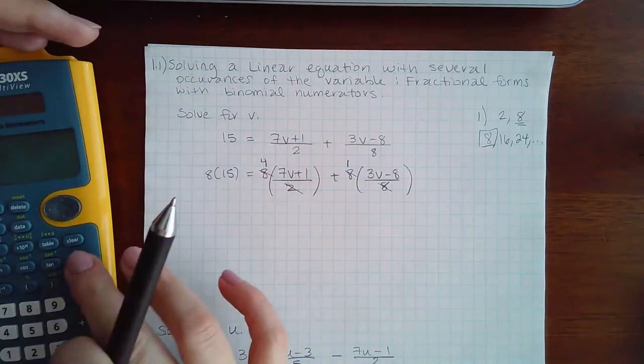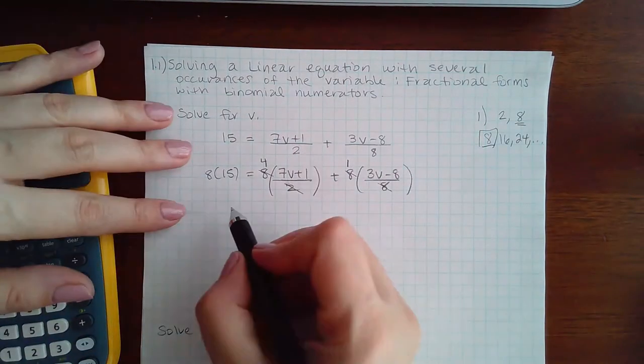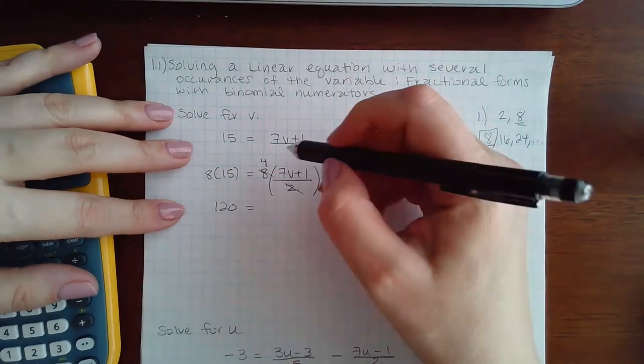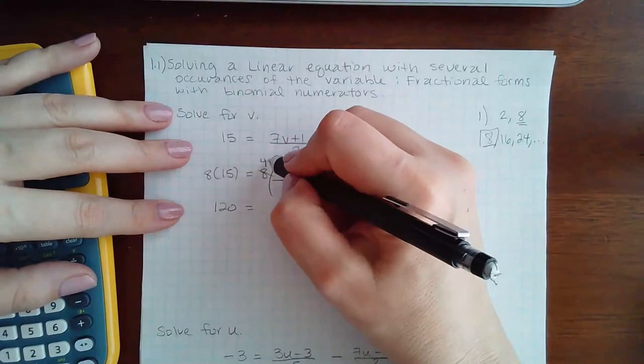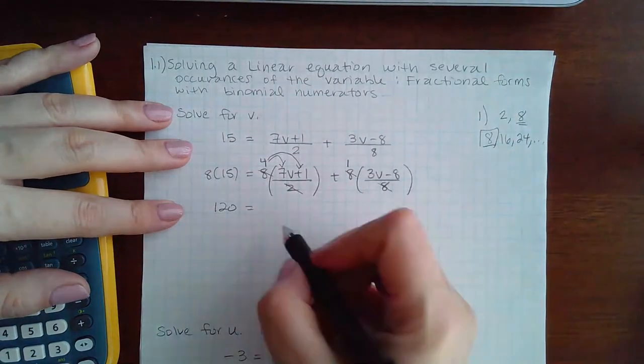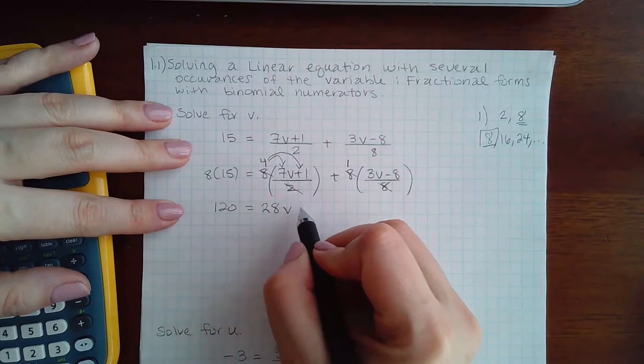Now here, 8 times 15 is 120. Here you have a 4. It has to be multiplied by everything in the parentheses. So the 4 will actually have to get distributed. So I get 28V plus 4.